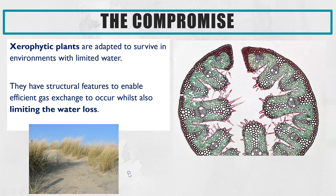There are other ways to reduce water loss as well. Plants called xerophytes really have to manage this compromise of requiring carbon dioxide for photosynthesis whilst not losing essential water by evaporation. Xerophytic plants can survive in harsh conditions with a lack of water. They have structural features enabling them to exchange gases through their stomata whilst also limiting water loss. Here is a micrograph of a cross section through the leaf of marram grass, which you find on sand dunes where there's not much water because the sand is very porous and drains away, and also because it's very salty being near the sea.